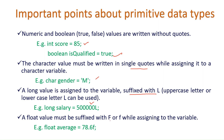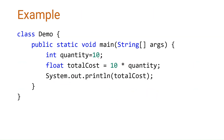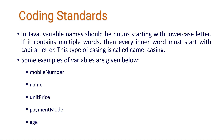For float values, you must suffix with a small f or capital F, which tells the compiler it is a float value. For example, you can declare 'int quantity' and 'float totalCost = 10 * quantity', then print the total cost using System.out.println.